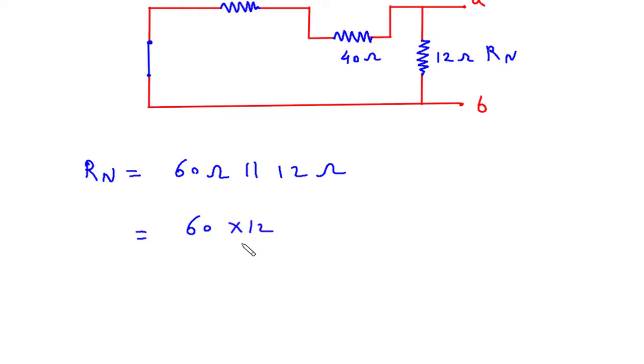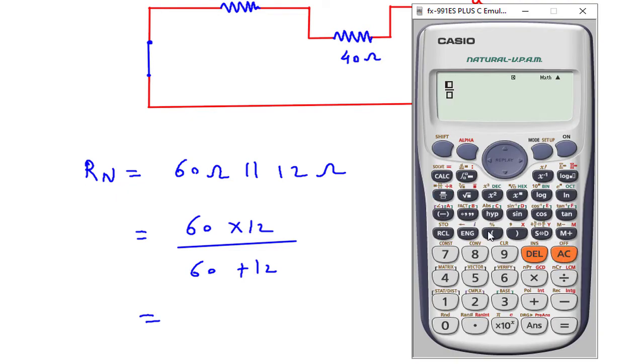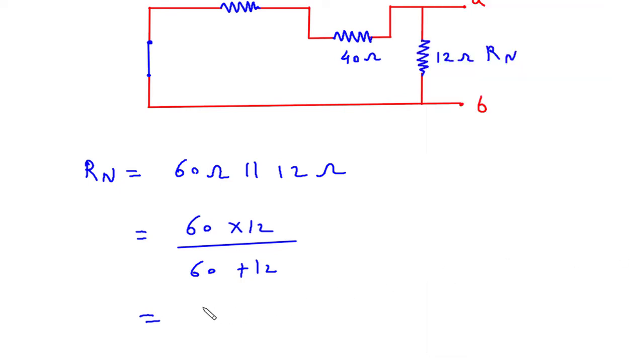So 60 into 12 divided by 60 plus 12. So it is 10 Ohm. Therefore RN is equal to Norton's resistance is equal to 10 Ohm.